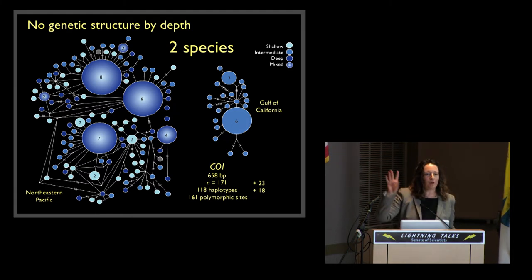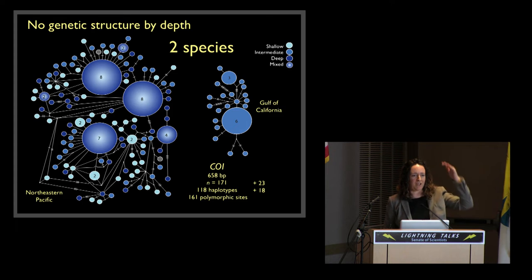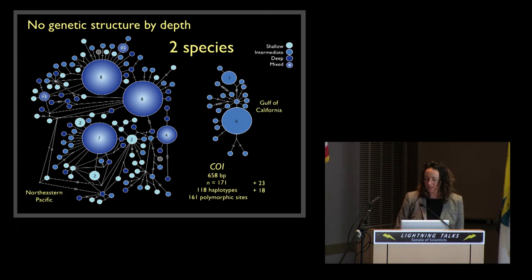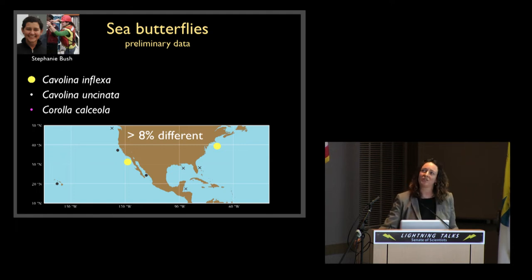Follow-up research to this is that the males of this species ontogenetically migrate — they move as they mature down into deep water, and that's how this mixing probably occurs. The next example I want to show you is work by my postdoc, Stephanie Bush, who's looking at sea butterflies. She's just arrived a few months ago, so this is her preliminary data looking at pteropod molluscs.